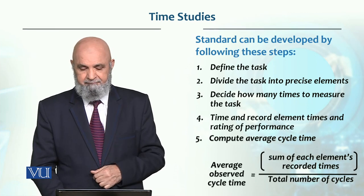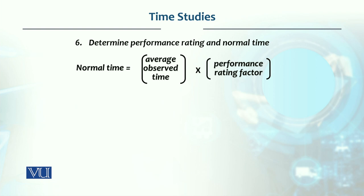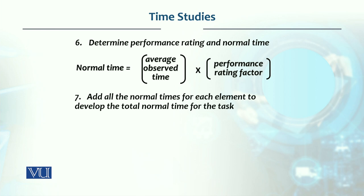Normal time determine کرنے کے لیے average observed time کو performance rating سے multiply کریں۔ Performance rating یہ ہے کہ worker کتنا percent faster یا slower کام کر رہا تھا - اگر rating 0.85 ہے تو وہ normal person سے 85% slower تھا، اگر 1.10 ہے تو 10% faster تھا۔ ہر work element کا normal time determine کر کے سب کو sum کریں۔